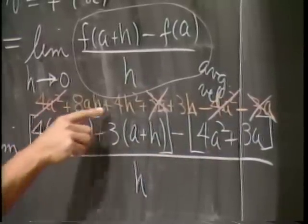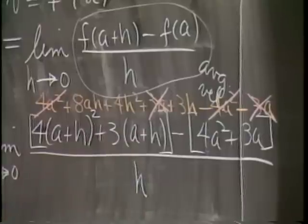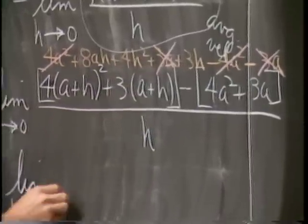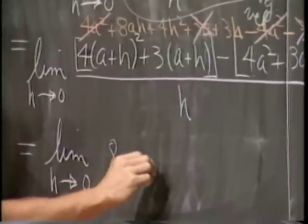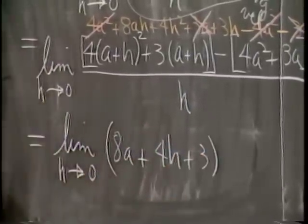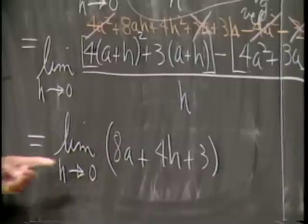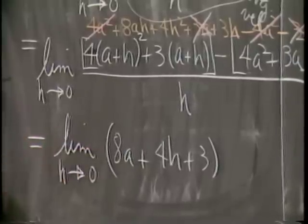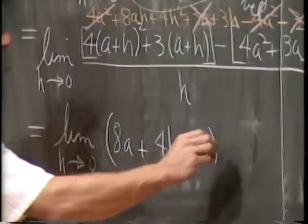And what we're left with is a limit of that expression over h. I'll cancel the h, which is now freed up out of every term, 8a plus 4h plus 3. OK. A little bit of algebra there. And then when h goes to 0, I'm talking about a polynomial in h, so I can just plug in there. And we get an 8a plus 3 over here.